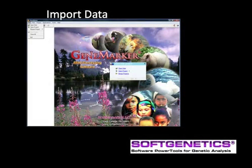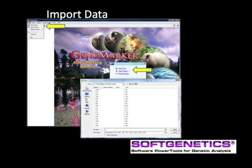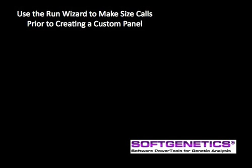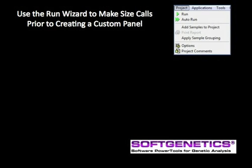As a quick review from the introductory tutorial, data is imported using the File drop-down or the Open Data Start Project menu, then clicking OK. The main analysis screen contains a list of data files, the electropherogram of selected files, and a synthetic gel image. Please view the introductory GeneMarker webinar for details regarding linked navigation, zooming in and out, the all-color browser, and viewing individual dye channels. A three-page run wizard is used to make size calls and to save run parameters in a template for routine analysis of similar data sets. Activate the run wizard from the Project drop-down menu by selecting Run.